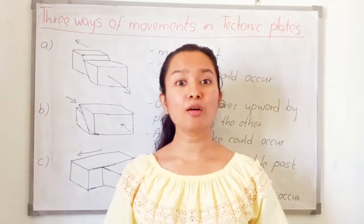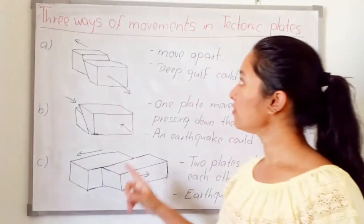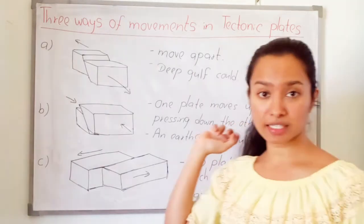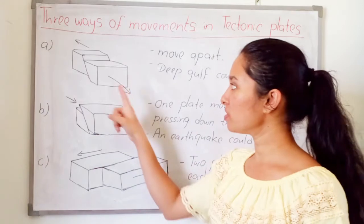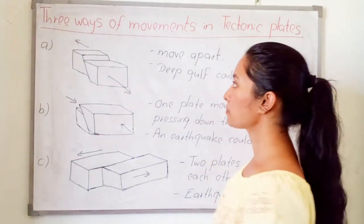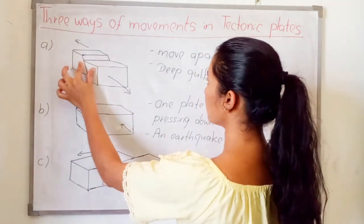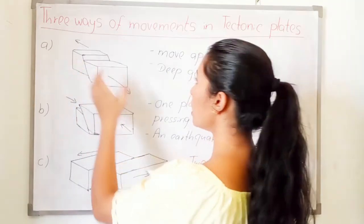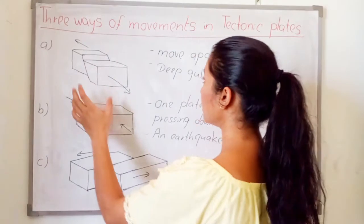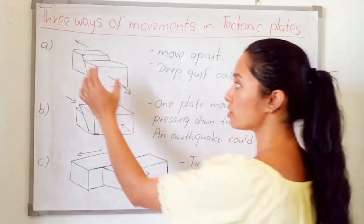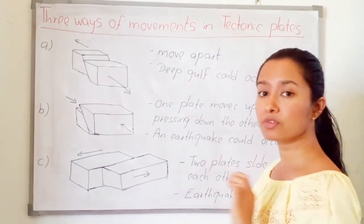The tectonic plates are moving, and there are three ways of movement. First: these two plates move apart. When plates move apart, a deep gulf could occur because of this movement.